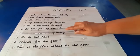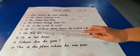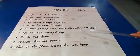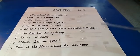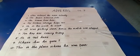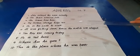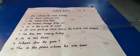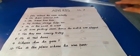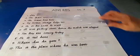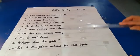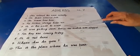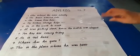Sentence six reads: it was getting dark, hence the match was stopped. I ask the question 'why was the match stopped?' and you will answer 'because it was getting dark.' So therefore, 'hence' or 'because' will be your adverb.